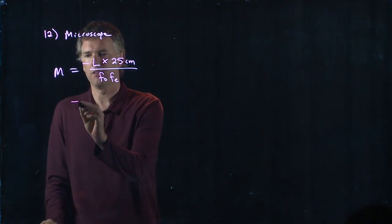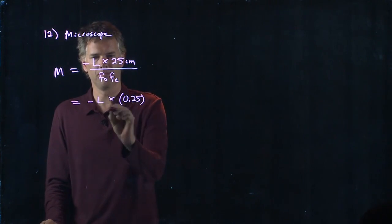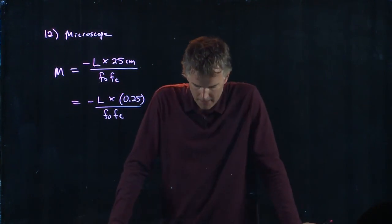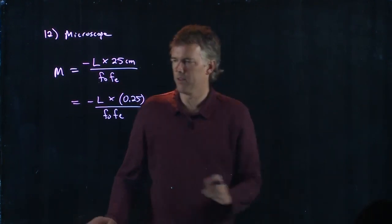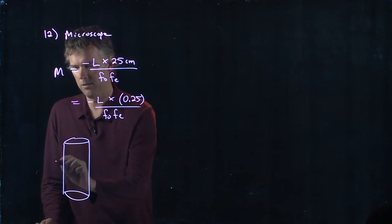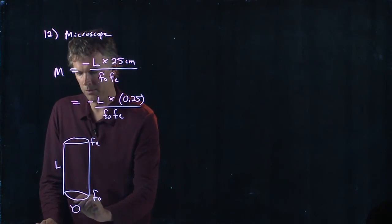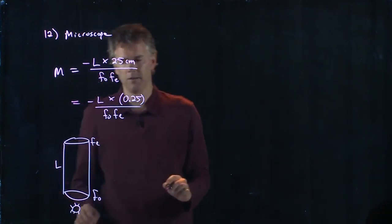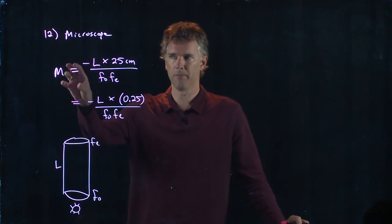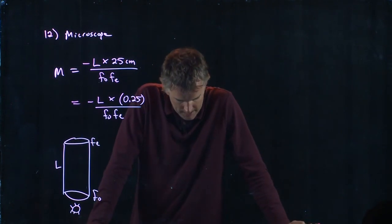So if we're going to keep everything in SI units, then this should be 0.25 over the focal length of the eyepiece times the focal length of the objective. And they give us a lot of this information. L is the length of the barrel. So here's your lens, here's your other lens. This is L. That's your objective, that's your eyepiece. You put your little bug down there and you take an image of it. And how big that bug looks to you is given by the magnification M times the original size.